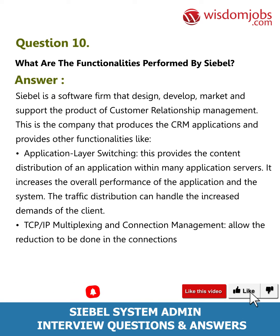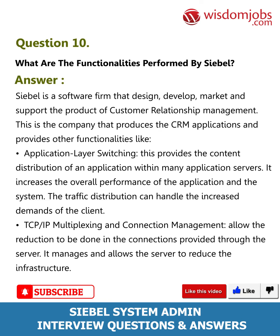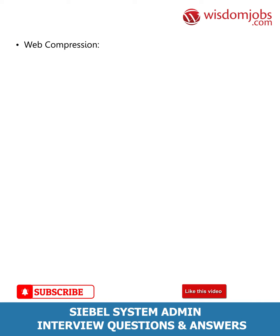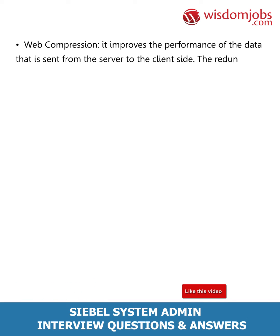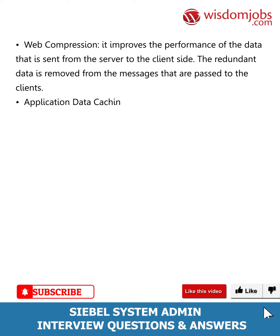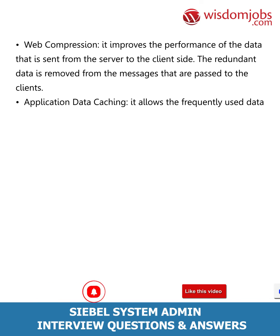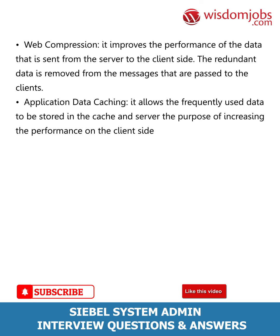Additional Siebel functionalities include: TCP/IP multiplexing and connection management, which allows reduction in the connections provided through the server, managing and reducing infrastructure. Web compression improves performance of data sent from server to client side by removing redundant data from messages passed to clients. Application data caching allows frequently used data to be stored in cache on the server, increasing performance on the client side and reducing the load on servers.